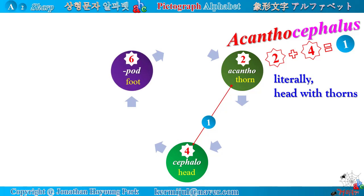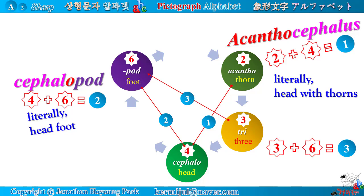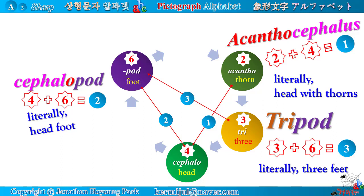Star number six — Latin root pod, meaning foot. Star number three — Latin root tri, meaning three. Star number three and star number six make the word tripod, which literally means 'three feet.' A tripod is a three-legged stand for supporting a camera or other apparatus. A tripod has three legs, an octopus has eight legs, and a squid has ten legs.